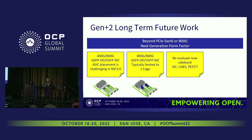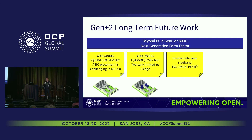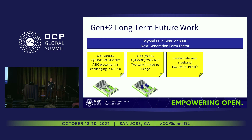The sideband has also evolved — we have more sideband options now. I3C is becoming more popular. We also have USB 3, which currently has no definition in OCP Next. There's also PASTI — the DCMHS group has come up with PASTI, a new sideband tunneling interface, which you'll likely hear more about tomorrow.